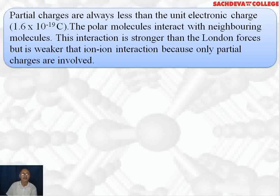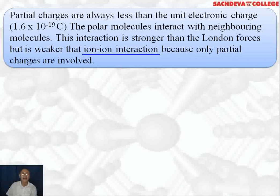A full unit charge develops when there is a complete transfer of electrons. Here, electrons are only attracted towards the more electronegative atom, so it acquires a partially negative charge, while the other atom, which is less electronegative, has a partially positive charge. Polar molecules interact with neighboring molecules, and this interaction is comparatively stronger than London forces but weaker than ion-ion interaction because only partial charges are involved. In ion-ion interaction, an ionic bond is formed with strong electrostatic forces of attraction.